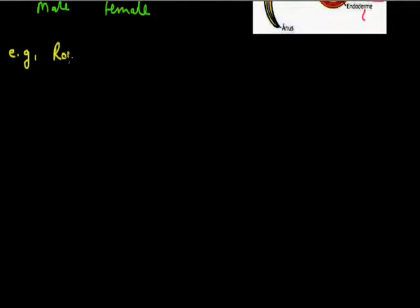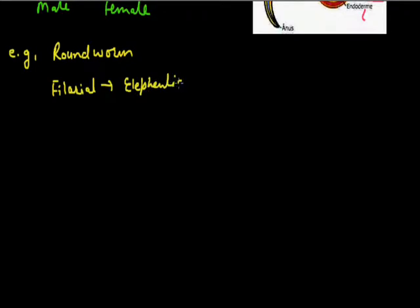The examples of this group include Ascaris, also called roundworm. Another disease caused by nematodes is Elephantiasis, in which the limbs of a patient become swollen like an elephant's limbs due to excessive accumulation of fluid. So this is the phylum Nematoda, also called Aschelminthes. Thanks for today.